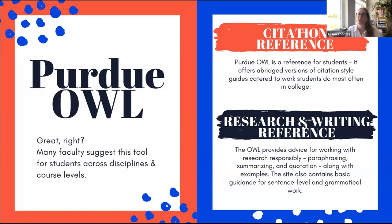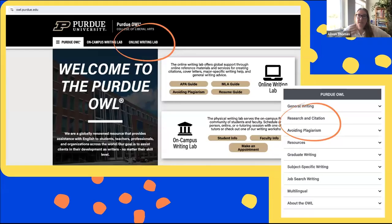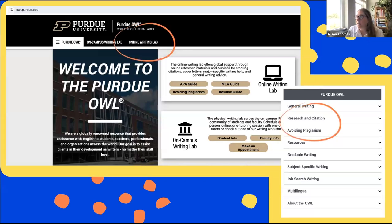In the circles I've worked in, the Purdue OWL is often recommended to students primarily as a citation reference, but also as a reference for research and writing in general. It offers a summary of what MLA style is about, citation architecture for how to make a citation in MLA format, and how to cite different source types. The research and writing reference section covers paraphrasing, summarizing, and quotation, and gives advice with examples and little quizzes. Faculty generally assign it as a reference tool before something is due.